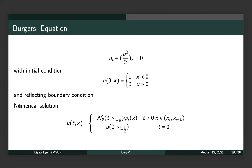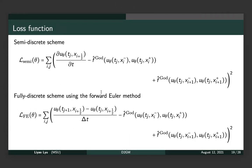The second example is Burgers' equation with a given initial condition and reflective boundary conditions. The numerical solution is constructed such that at t equals zero we assign the exact value, and for t greater than zero we use the neural network value. The loss function is again derived from the weak formulation. We try both the semi-discrete and fully-discrete schemes, using the Godunov flux.